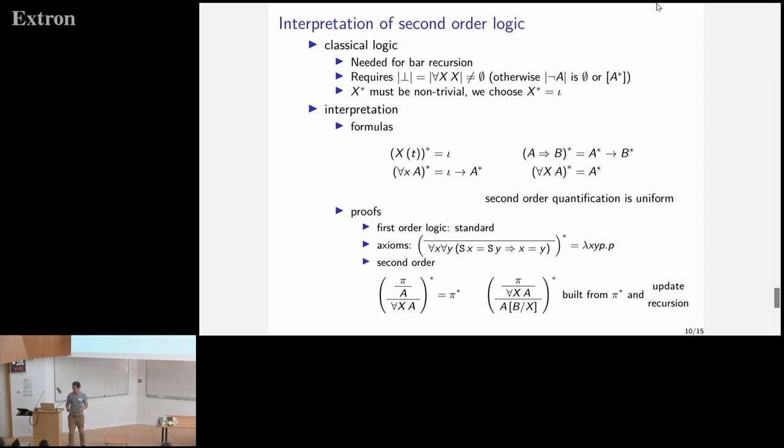The interpretation of proofs is really straightforward, except for the elimination of second-order quantification, which involves, of course, update recursion. I won't have time to go into the details of this. If you want to see the details, there is the extended abstract, and there is a full article on my web page. Don't hesitate to have a look at it and ask me questions.